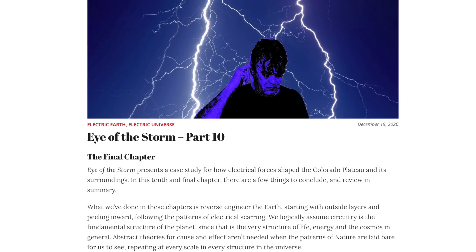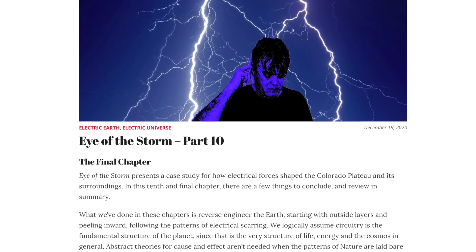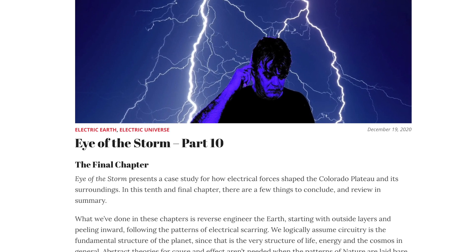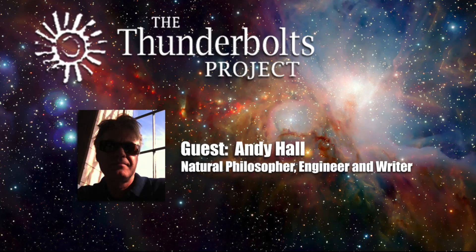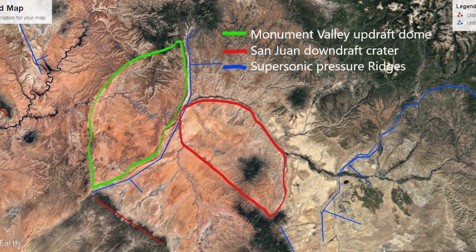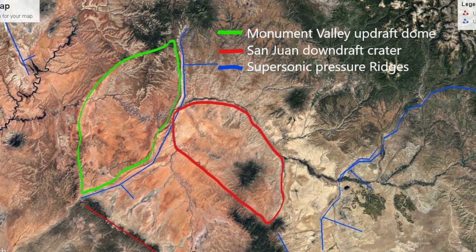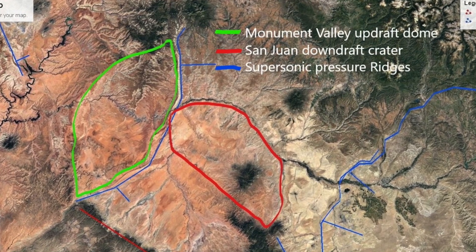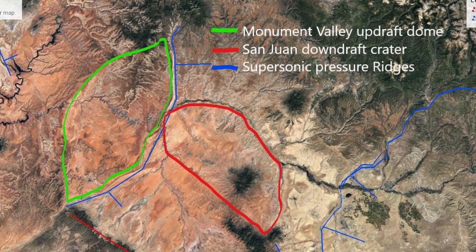Welcome to Space News. This is Andy Hall. Over the course of the past year, I've been presenting a multi-part series called Eye of the Storm. In Chapter 5, we looked at coronal storms — the San Rafael Swell and Capitol Reef, as well as Monument Valley and the San Juan River Basin — as sets of dome and crater pairs produced in the eye of the Great Primordial Storm that created the Colorado Plateau.